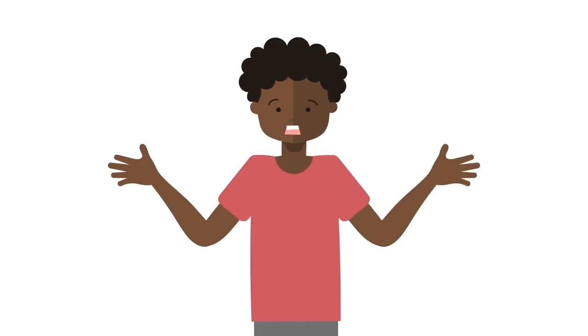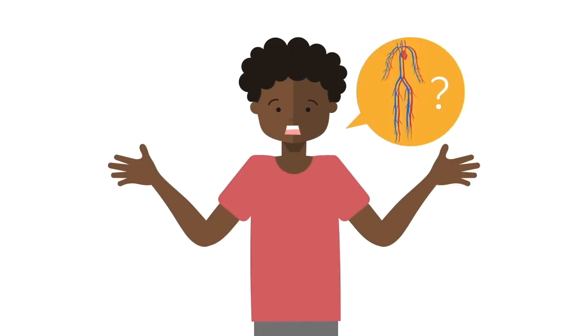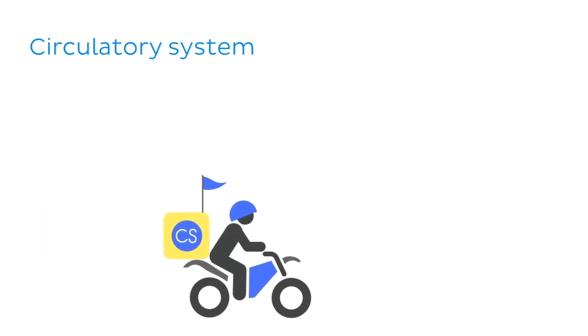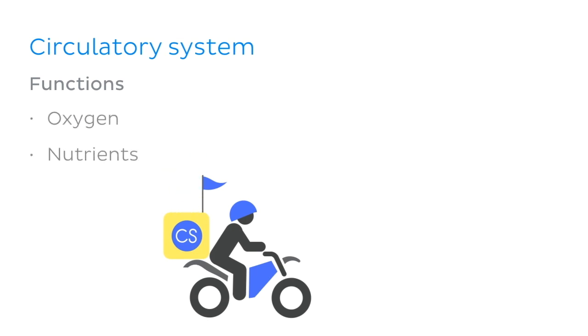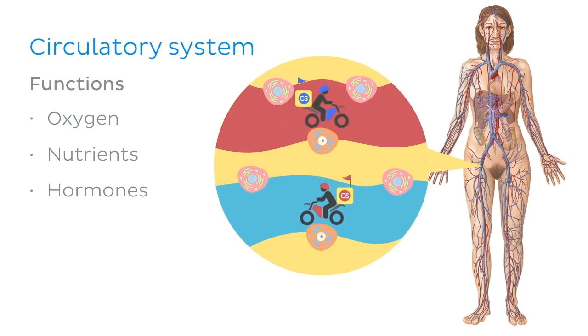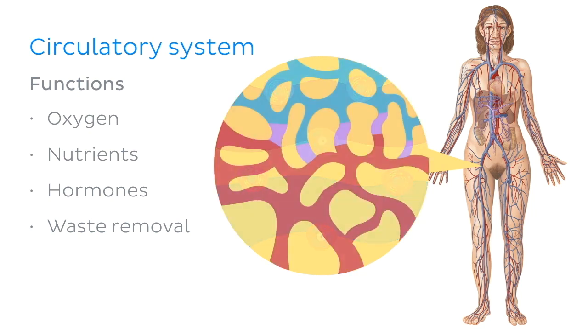But firstly, what is the circulatory system? Before we jump right into the deep end, let's have a little recap. The circulatory system is your very own biological delivery service. It functions to deliver oxygen, nutrients and hormones to cells across the entire body, whilst simultaneously removing any unwanted waste products to other parts of the body for disposal. Through a network of arteries and veins of varying sizes, which are interconnected by capillaries, blood is carried around to all the tissues in the body.